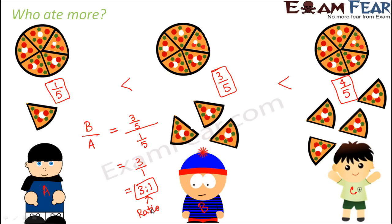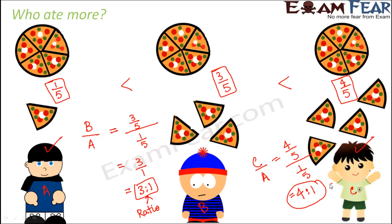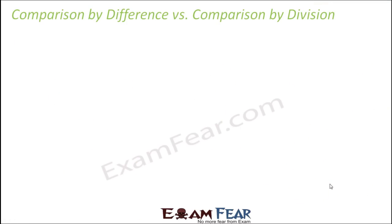So ratio is all about comparison of two quantities by division. In this case, B ate three times what A ate. Similarly, for C and A: four-fifths divided by one-fifth gives four-to-one, meaning C ate four times what A ate. So this kind of comparison — how much did B or C eat with respect to A — is what comes under ratio.